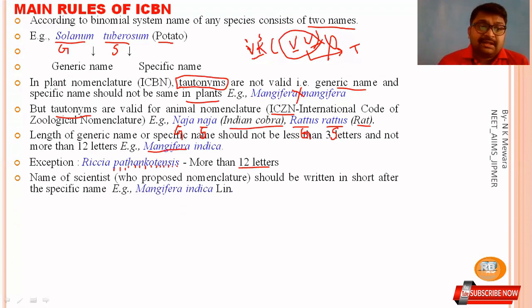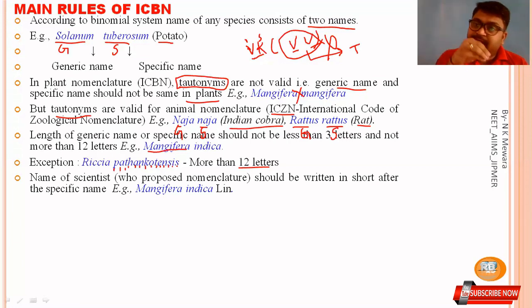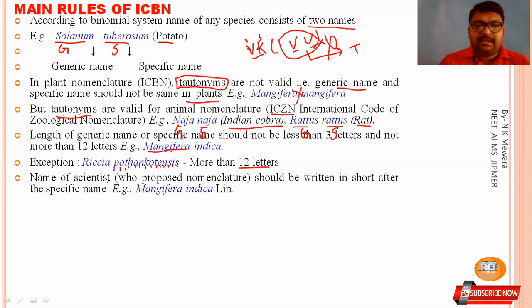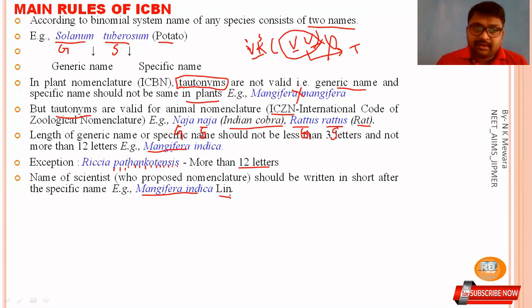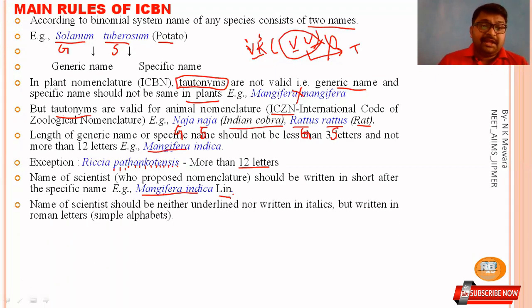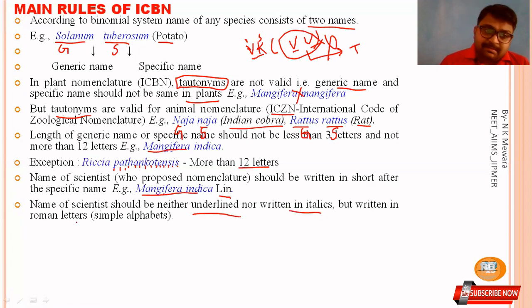The name of the scientist who discovered or named the organism is always written after the scientific name. For example, Mangifera indica was named by Linnaeus. The scientist's name should be written in simple text — neither underlined nor in italics. For example, Mangifera indica L. (Linnaeus) is written in simple alphabet.